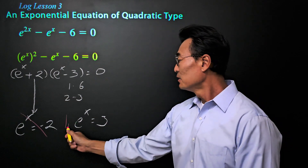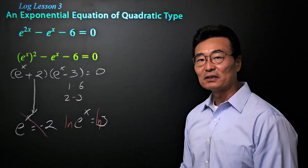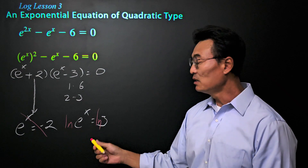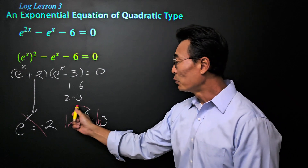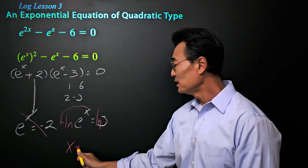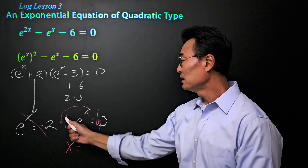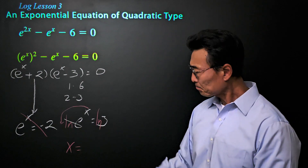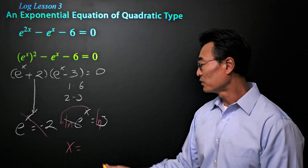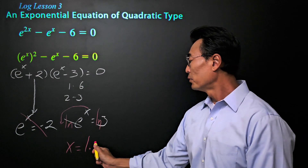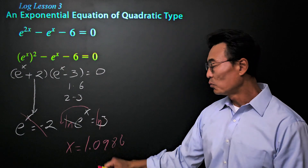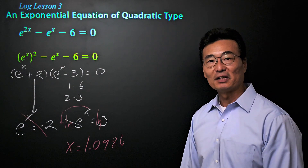To solve for x, we take the natural log of the left and right side, because natural log and e will cancel each other out, where we take the x and put it out in front. So we get x equals — natural log and the e cancel each other out. If you take the natural log of three on the calculator, we get 1.0986, rounded to four decimal places.